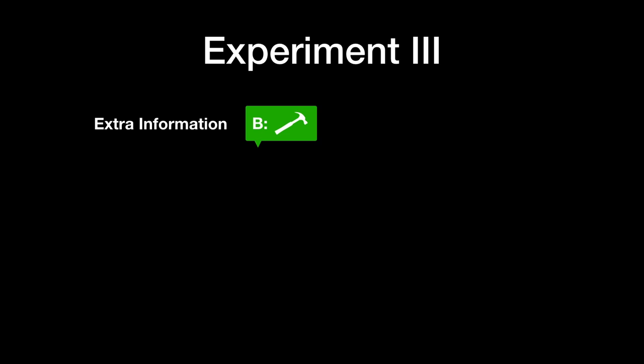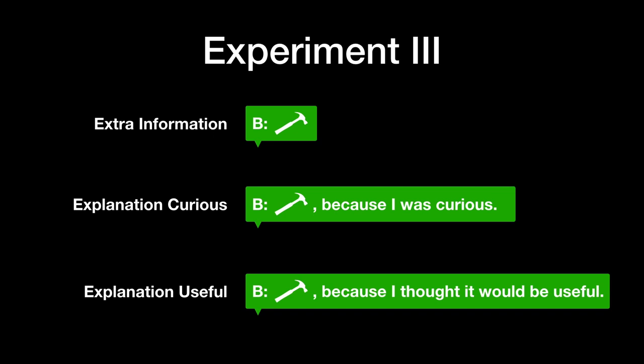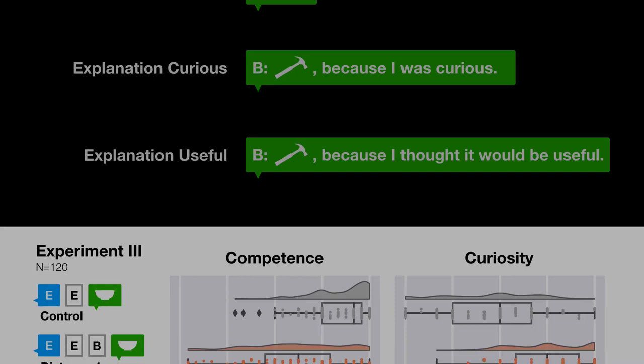In the extra information condition, the robot simply reports the contents of the extra box that it checked. In the curious explanation video, the robot reports the contents of the extra box and says that it checked because it was curious. In the utility explanation video, the robot's explanation instead says that it checked because it thought it would be useful.